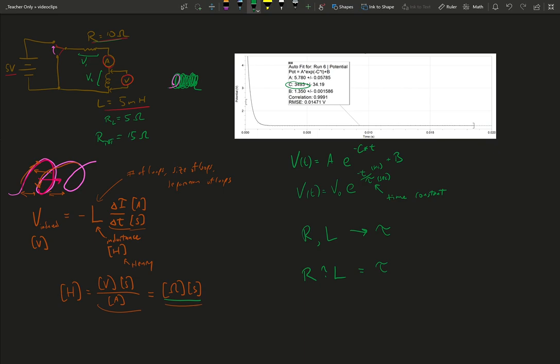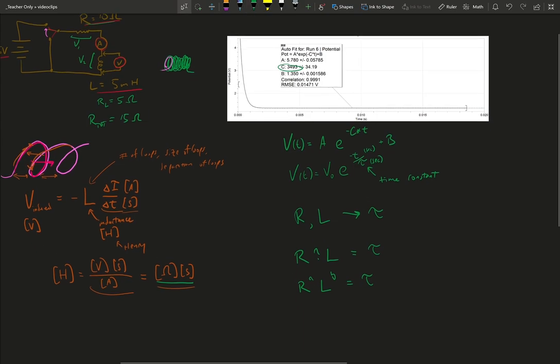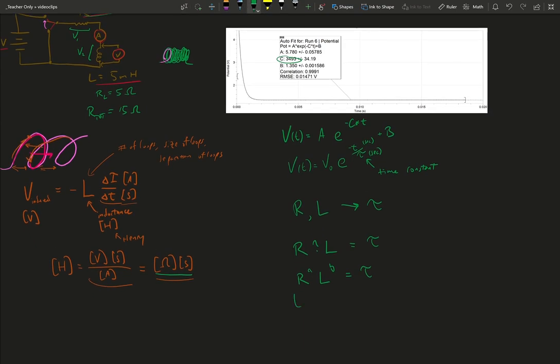One very surefire way to figure out how this is going to work out, this is going to seem a bit more abstract, but this is a way to always figure out how equations will be made from just dimensions. I can say R to the A power and L to the B power is going to give me my time constant tau. And I know that my R is just going to be ohms, and this is going to be raised to the A power.